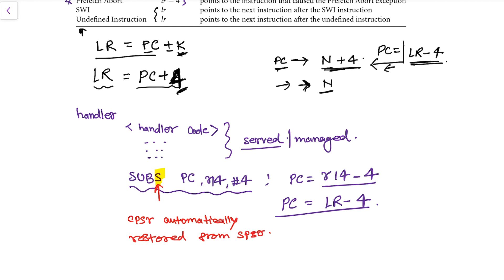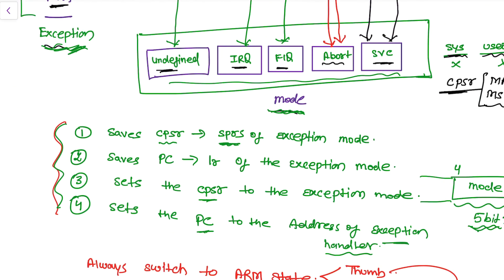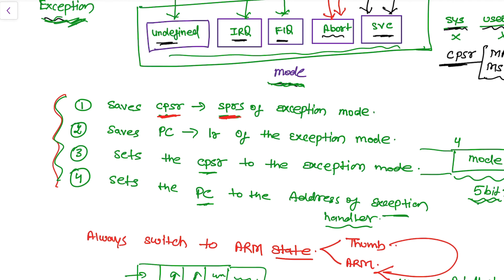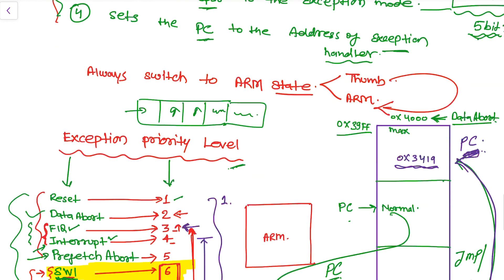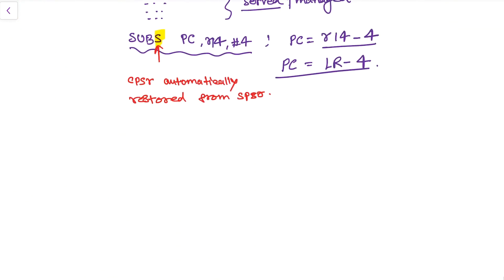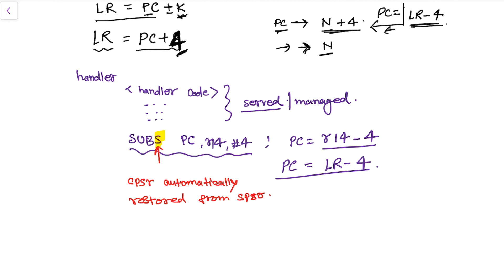As you may remember from previous tutorials, when an exception occurs the CPSR is saved into the SPSR. Once the exception handling is done and the service is complete, the processor comes back to the normal position where the exception had occurred. This is done by loading the PC with the content of the link register.